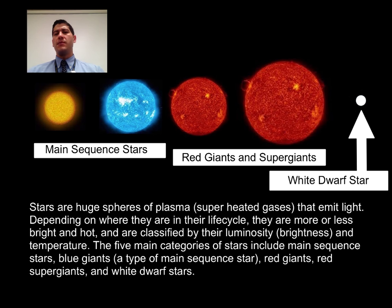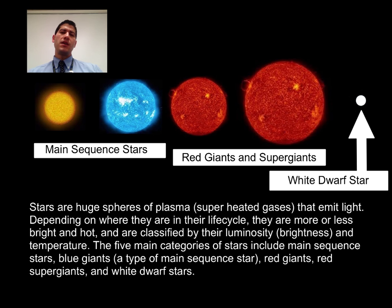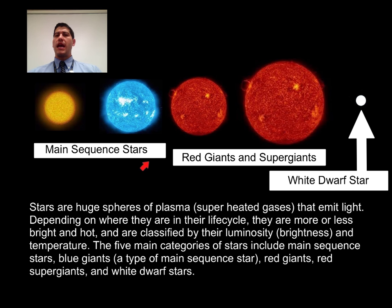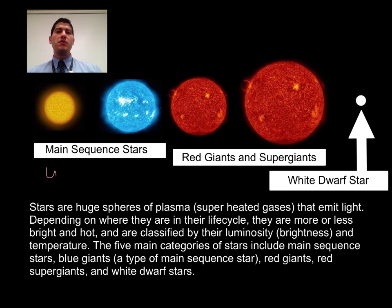They create almost all of the elements you've studied on the periodic table this year, from hydrogen and helium, which scientists believe were generated by the Big Bang. Stars can be sorted into five basic categories, which correspond to their age and other characteristics like their brightness and temperature. If they're very massive main-sequence stars, they may become blue giants, which are very hot and very bright.